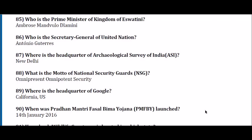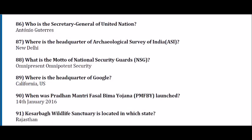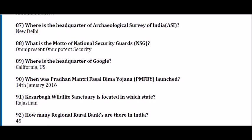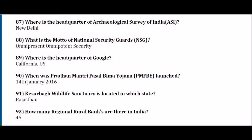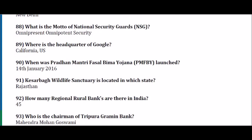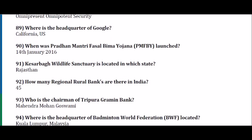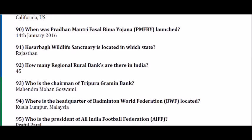Where is the headquarter of Google? California, US. When was the Pradhan Mantri Fasal Bima Yojana launched? 14th January 2016. Kesar Bagh Wildlife Sanctuary is located in Rajasthan. How many Regional Rural Banks are there in India? 45. Who is the Chairman of Tripura Gramin Bank? Mahendra Mohan. Where is the headquarter of Badminton World Federation? Kuala Lumpur, Malaysia. Who is the President of All India Football Federation? Praful Patel.